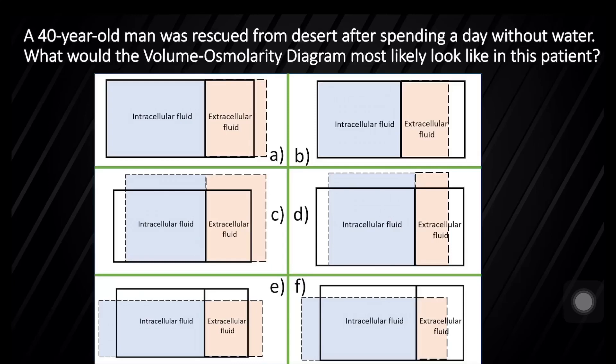Second question: a 40-year-old man was rescued from the desert after spending a day without water. What would the volume-osmolarity diagram most likely look like in this patient? In a hot climate, there will be loss of water by sweating, and in sweating there is more water loss than the solute lost.